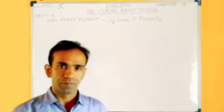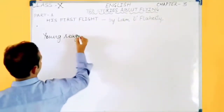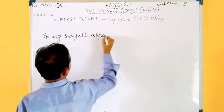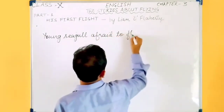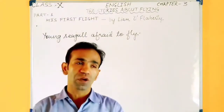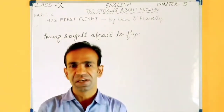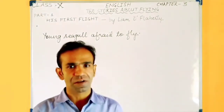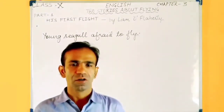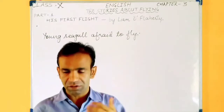The very first point: it is all about a seagull — a young seagull afraid to fly. There was a young seagull and he was all alone on his ledge — the edge of anything. His two brothers and his sister had already learnt the art of flying the day before. Only the young seagull did not know how to fly.